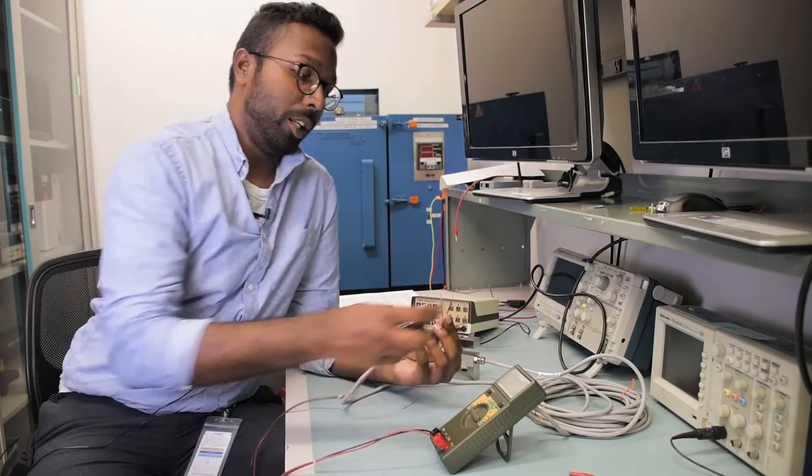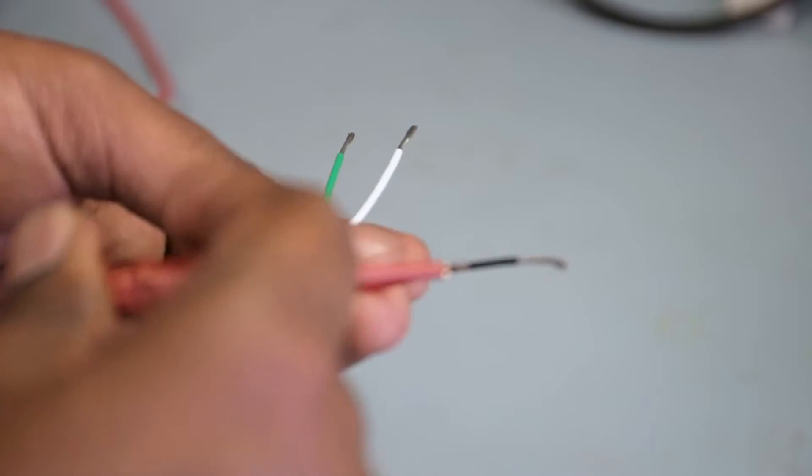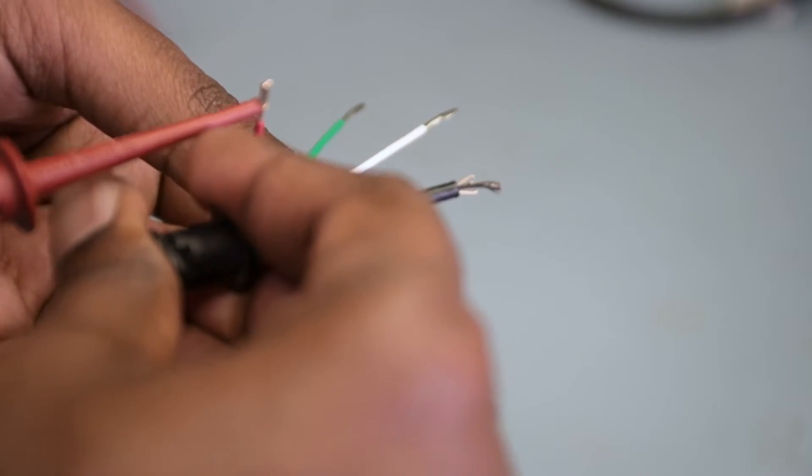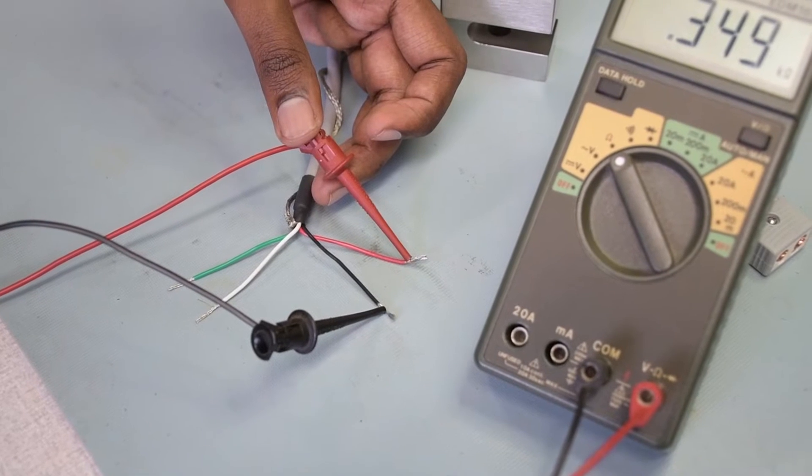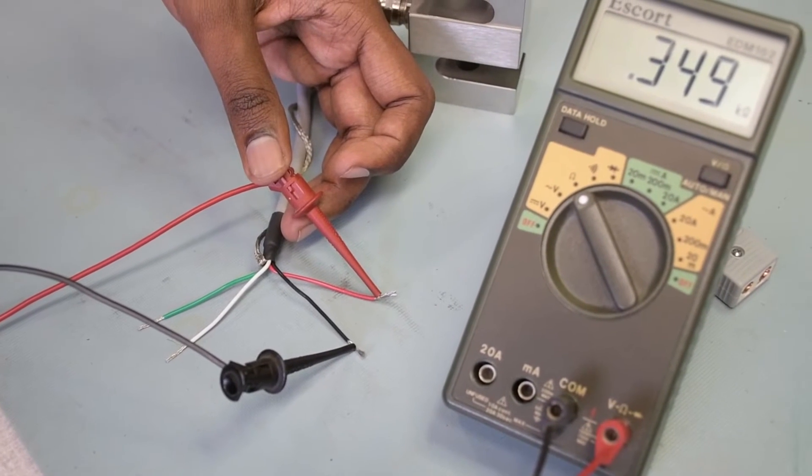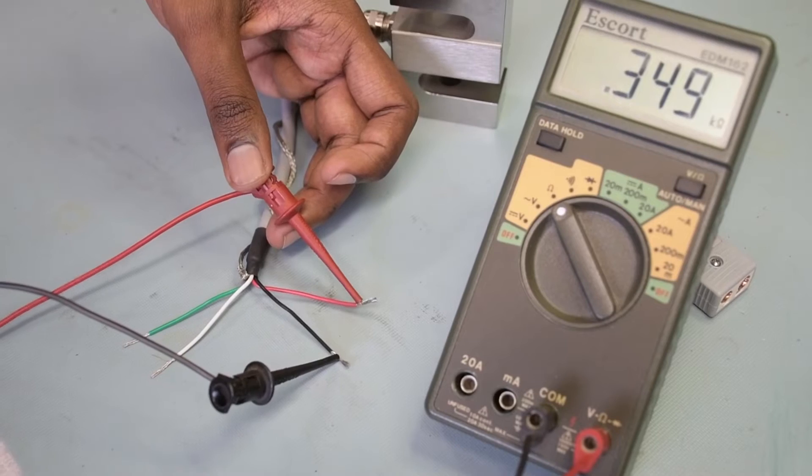So take your multimeter and measure the resistance across the two input leads. In this case, my input leads are red and black, and set your multimeter to read in ohms. My input resistance should be close to 350.10 ohms, and I'm reading 349 ohms, which is fairly close enough.